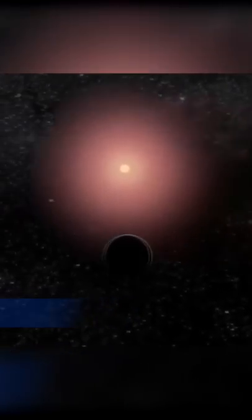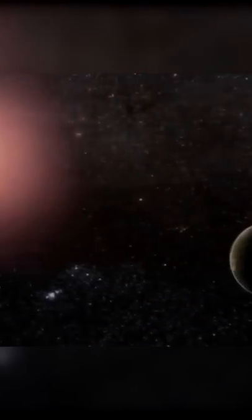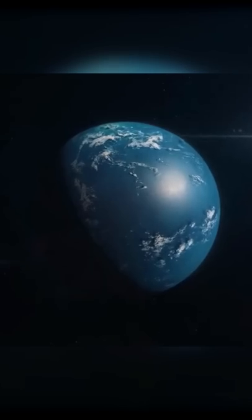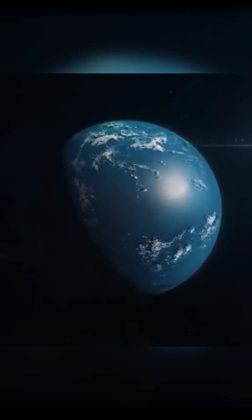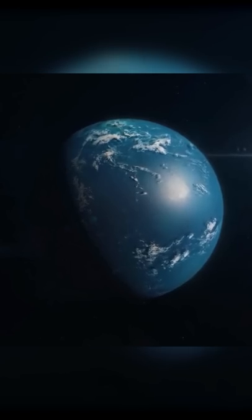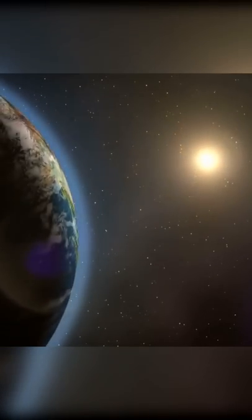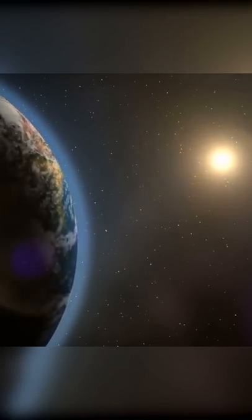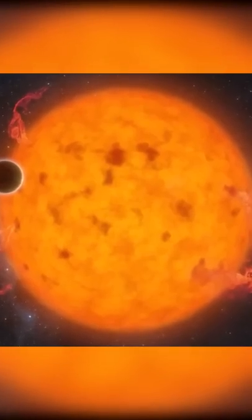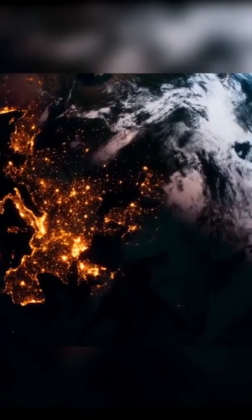Proxima B is 20 times closer to its host star than Earth is to the Sun. Observations indicate that the exoplanet is tidally locked with a permanent day side and permanent night side. The day side would most likely be inhospitable due to the constant flow of intense radiation from the parent star, but the night side could harbor life.